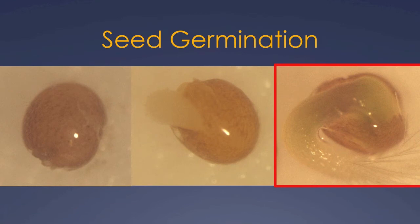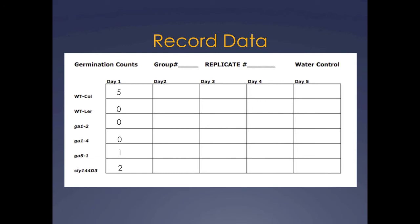As the seed continues to develop, you'll notice the root growing out more and the tissue starting to green. Each day you should count the number of germinating seeds, being careful not to count any seeds that simply have their seed coat broken without any radicle emerging. Only count the seeds that have already germinated.